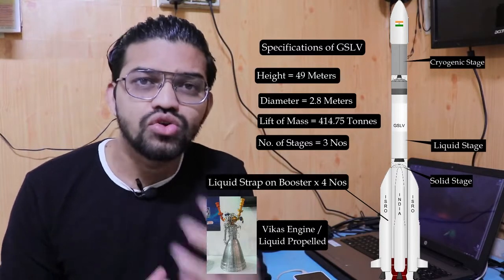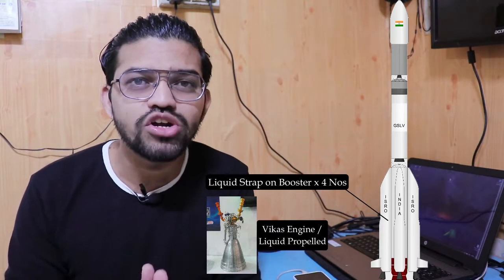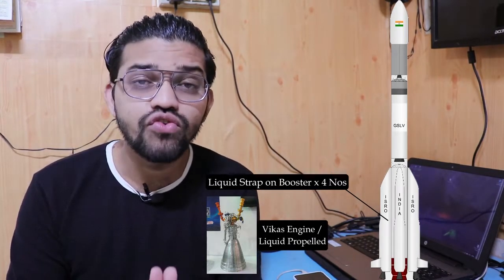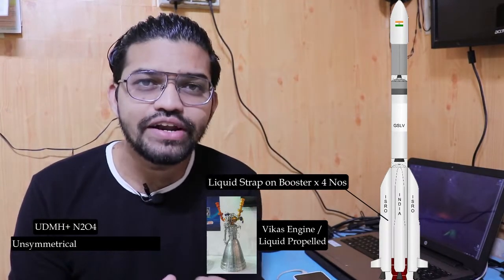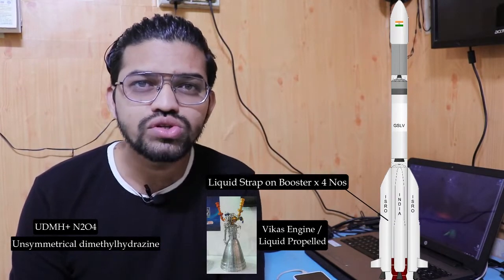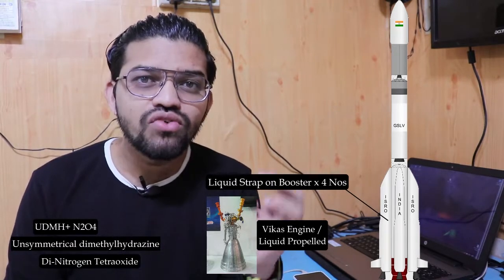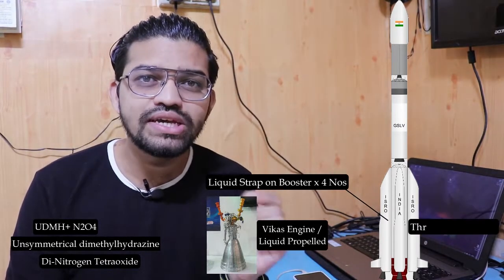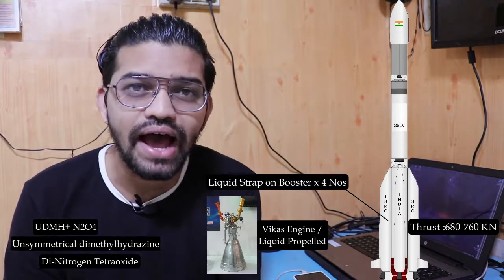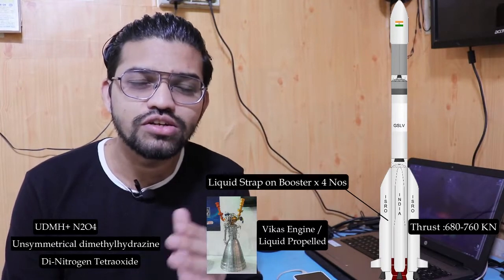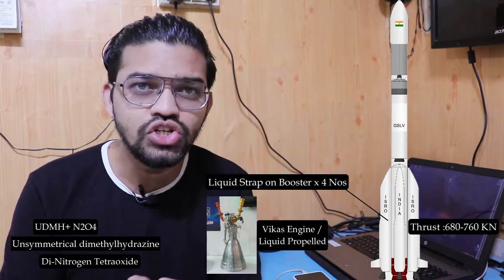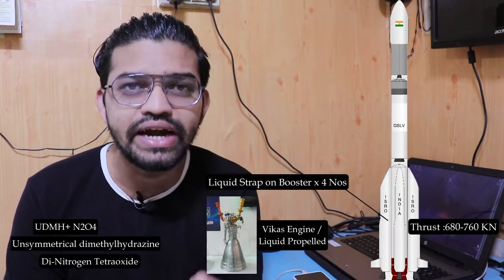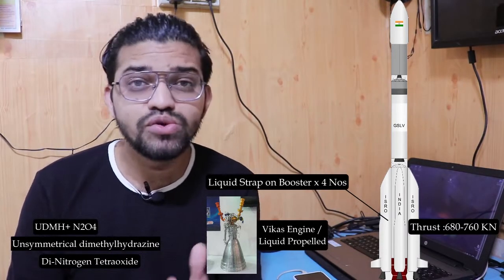Starting from the bottom, the GSLV has four liquid strap-on boosters using Vikas engines with the fuel UDMH (Unsymmetrical Dimethylhydrazine) plus N2O4 (Dinitrogen Tetraoxide). These four Vikas engines produce a thrust of 680 to 760 kilonewtons. Because this thrust alone is insufficient for lift-off, the first solid stage is ignited six seconds after the strap-on booster ignition. The burn time for the liquid strap-on boosters is around 150 seconds.